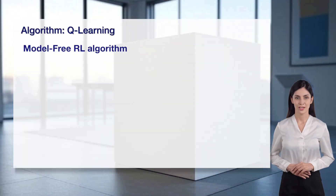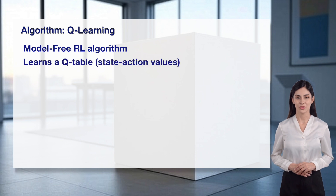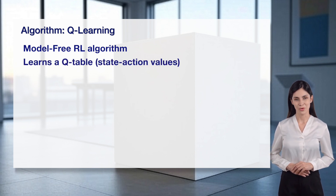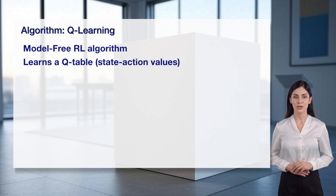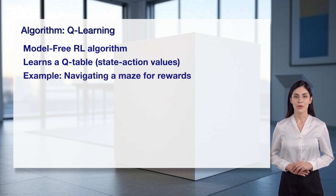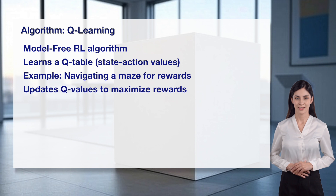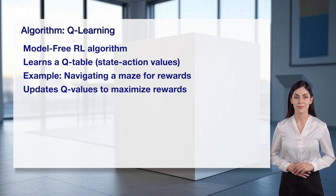Q-learning is a popular model-free reinforcement learning algorithm. It learns a Q-table, which stores values for each state-action pair, indicating their expected rewards. For example, an agent might use Q-learning to navigate a maze, choosing actions that lead to rewards. Q-learning updates the Q-values over time to maximize future rewards, improving the agent's decisions. It's a foundational algorithm widely used in RL for its simplicity and effectiveness.